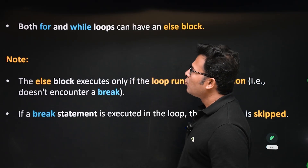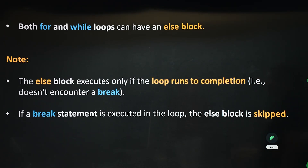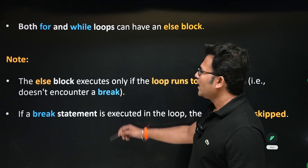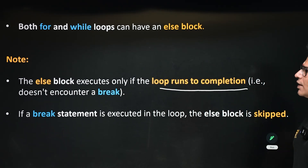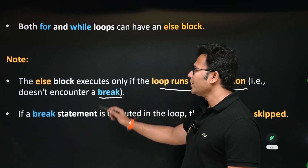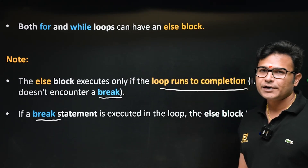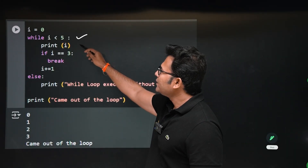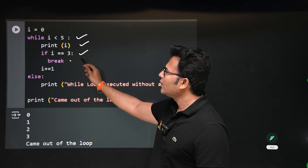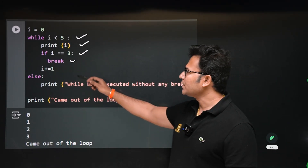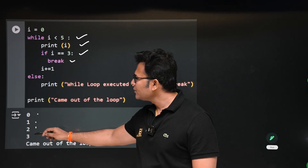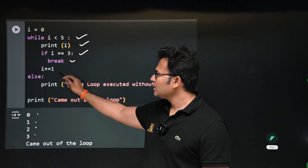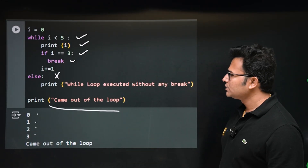Else is executed only if the loop runs to completion naturally without encountering any break. If a break statement is executed, else will not be executed. Look at this: while i less than 5, print i, if i equal to 3 break. Whenever i reaches 3 we are breaking — 0, 1, 2, 3 are printed, but when it hits 3 we break, therefore else will not be executed. 'Came out of the loop' will be executed instead.